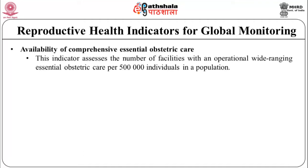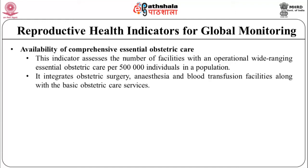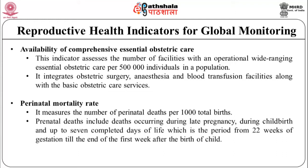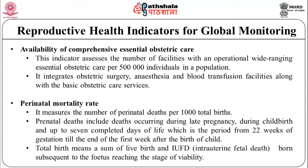Availability of comprehensive essential obstetric care assesses the number of facilities with operational wide-ranging essential obstetric care per 500,000 individuals in a population. It integrates obstetric surgery, anesthesia and blood transfusion facilities along with basic obstetric care services. Perinatal mortality rate measures the number of perinatal deaths per 1,000 total births. Perinatal deaths include deaths occurring due to late pregnancy, childbirth, and up to 7 completed days of life — that is, from 22 weeks of gestation till the end of the first week after the birth of the child. Total births means a sum of live births and intrauterine fetal deaths born subsequent to the fetus reaching the stage of viability.